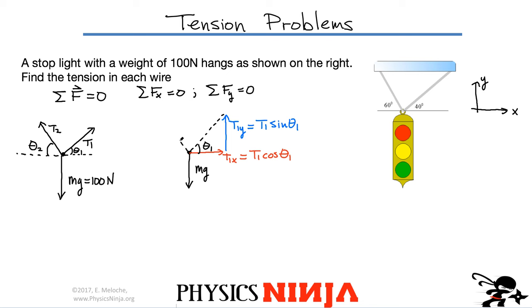Now, tension T2 acts along this direction. Tension T2 I can break down into two components. It's going to have an x component and it's also going to have a y component, T2y. The components are going to look pretty similar to these ones except the angles are going to be different. So T2y is simply going to be equal to T2 sin of theta2 and T2x is simply going to be equal to T2 cos of theta2.